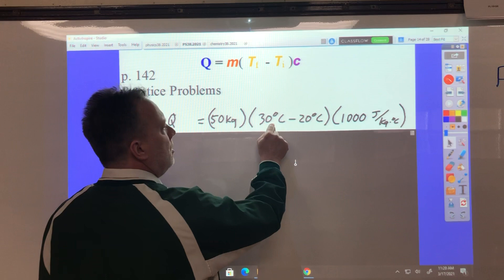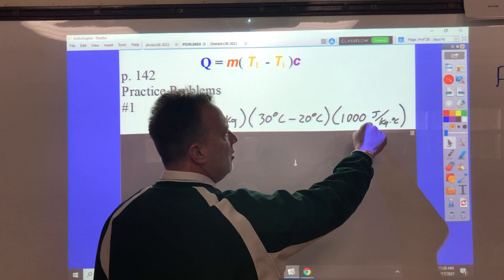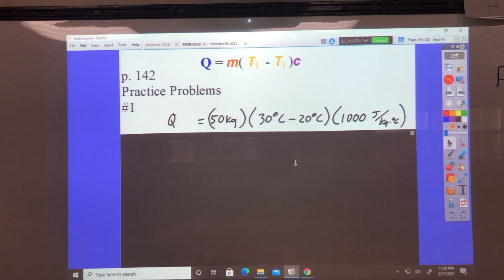So it's 50 kilograms times 30 degrees Celsius minus 20 degrees Celsius and the specific heat for air is 1000 joules per kilogram times degrees Celsius. Now what math do you do first here?